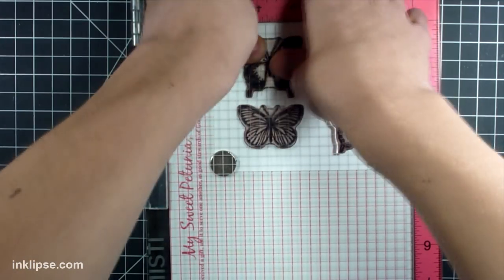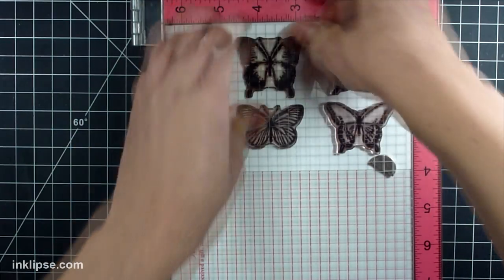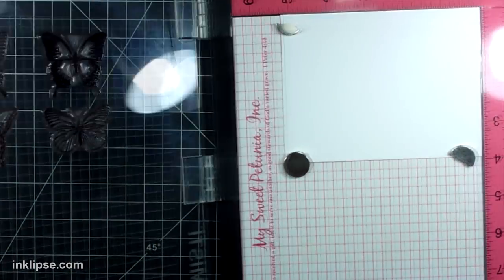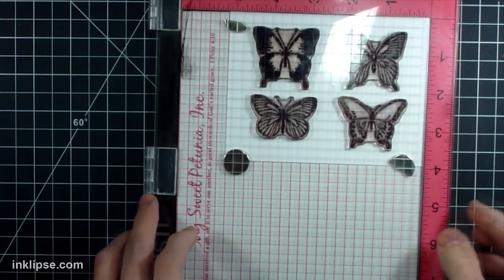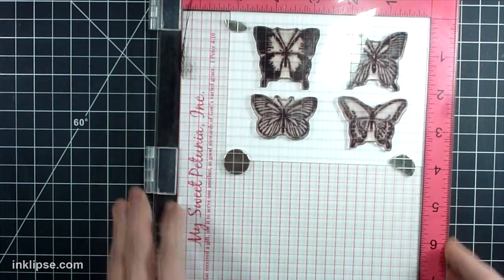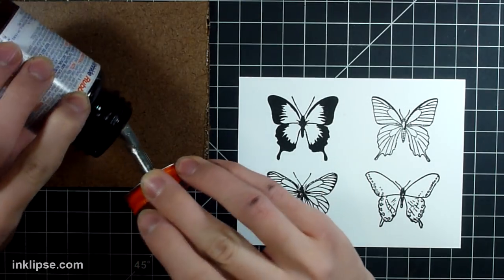I'm making two cards today, so I'm going to be stamping these on two different panels of cardstock because if I have the tools out, I might as well make two cards with two different color schemes. I'm just stamping these down, giving them really nice pressure on every single butterfly and I love how much detail these butterflies have.